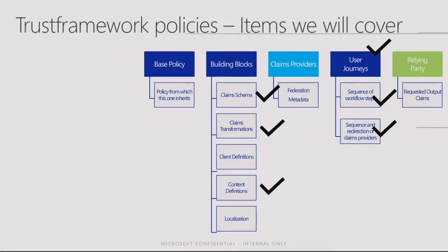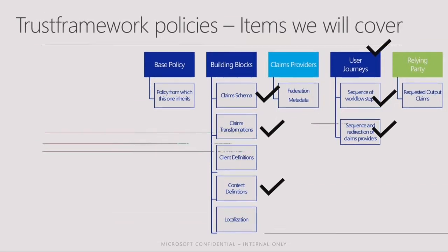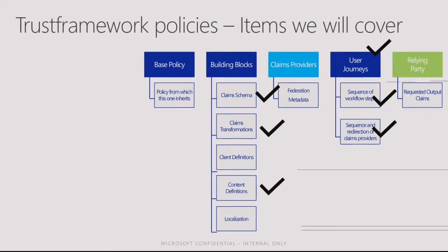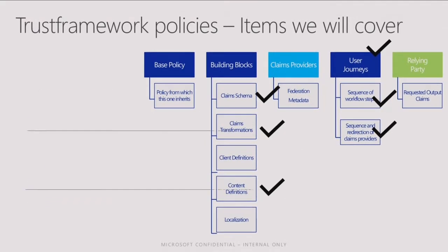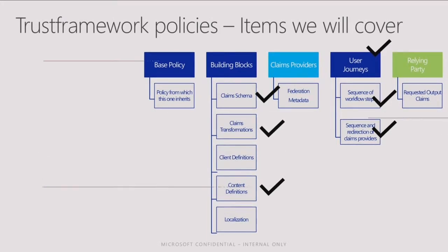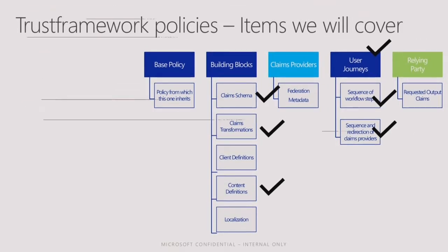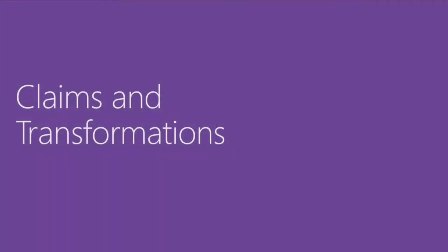This image was shown yesterday by Jose. It goes through the big XML policy and all the sections that exist in it. We have building blocks as one section — it has claim schema, claims transformations, content definitions, client definitions, and localization. In this session, I'll touch three of those: I'll go in-depth into claim schema, claims transformation, and then we'll discuss user journeys. Towards the end, Ronnie will go through key management. Let's start with claims and transformations.